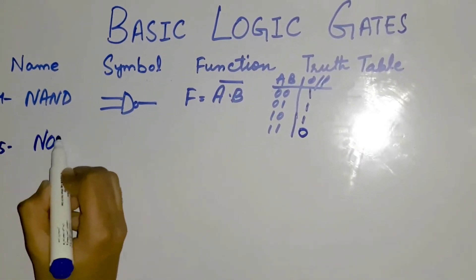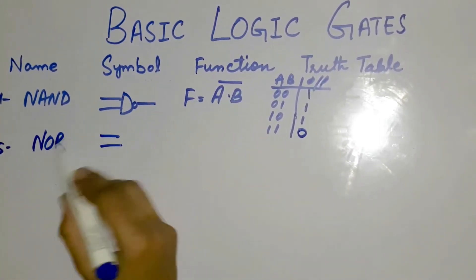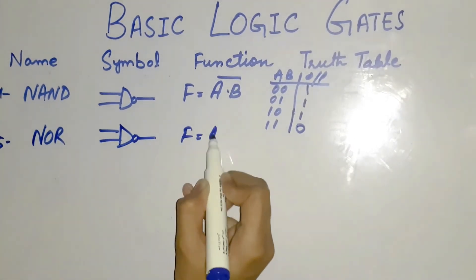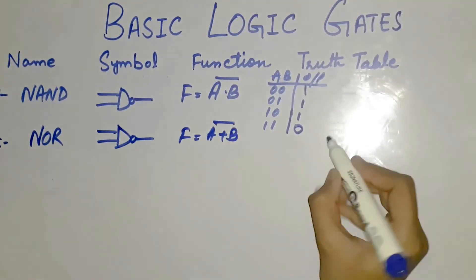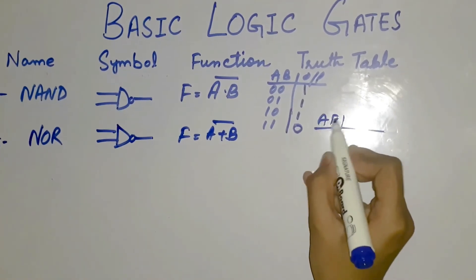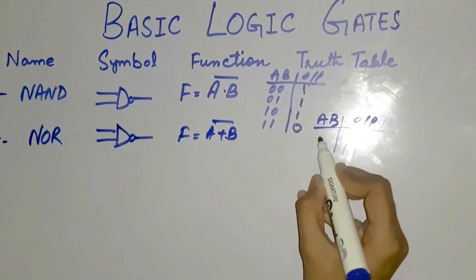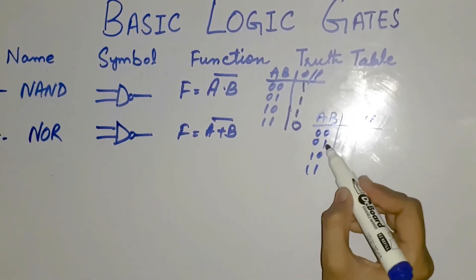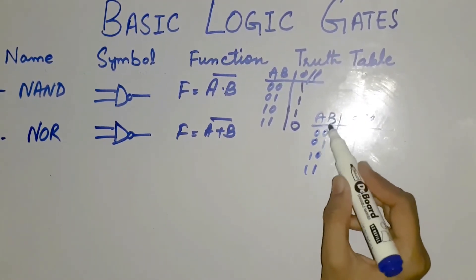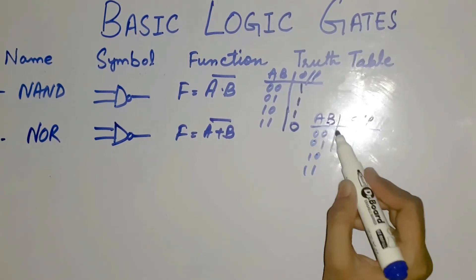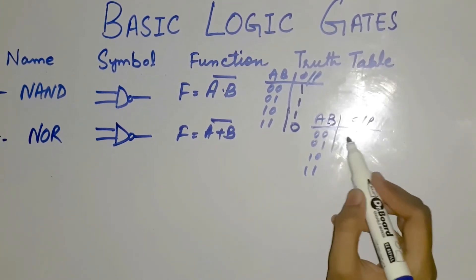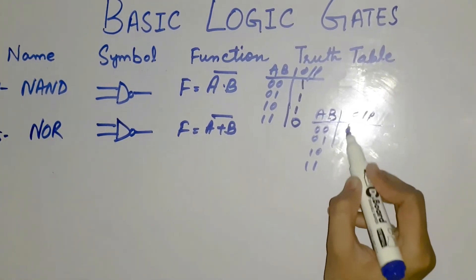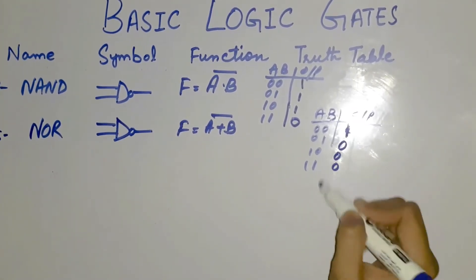The fifth one, we have the NOR gate, similar to NAND — it is the NOT of OR. So f equals a plus b, the whole bar. Its truth table is: a=0,b=0 gives 1; a=0,b=1 gives 0; a=1,b=0 gives 0; a=1,b=1 gives 0. In OR we have 1 when at least one input is 1, but in NOR we have 0 when at least one input is 1. So we will have 1 only when both inputs are 0.